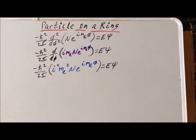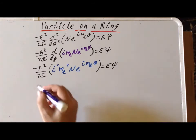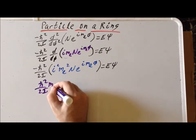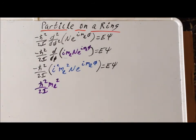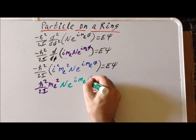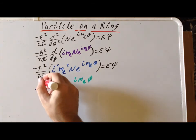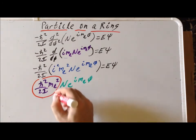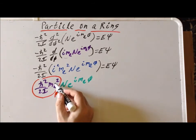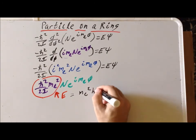We can make some simplifications. We note that i squared is simply equal to minus 1. So minus 1 times minus 1 cancels out, and we end up with h-bar squared over 2I times m_l squared times N e to the i m_l phi. We recognize that the expression in green is simply our wave function, and this expression is our eigenvalue E. Typically we switch around the location of m_l squared and h-bar squared, so we more conveniently write the energy as m_l squared times h-bar squared all over 2I.